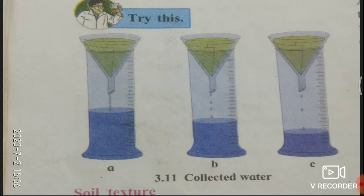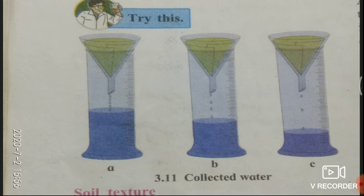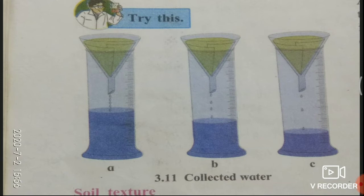In cylinder A take sand, B is sandy soil, and C is clay. Place the funnels on the measuring cylinders. Pour one test tube of water into each funnel. Observe how much water is collected in each measuring cylinder. We will observe that the water collected in sand is more than sandy soil, and water collected in sandy soil is more than clay soil.